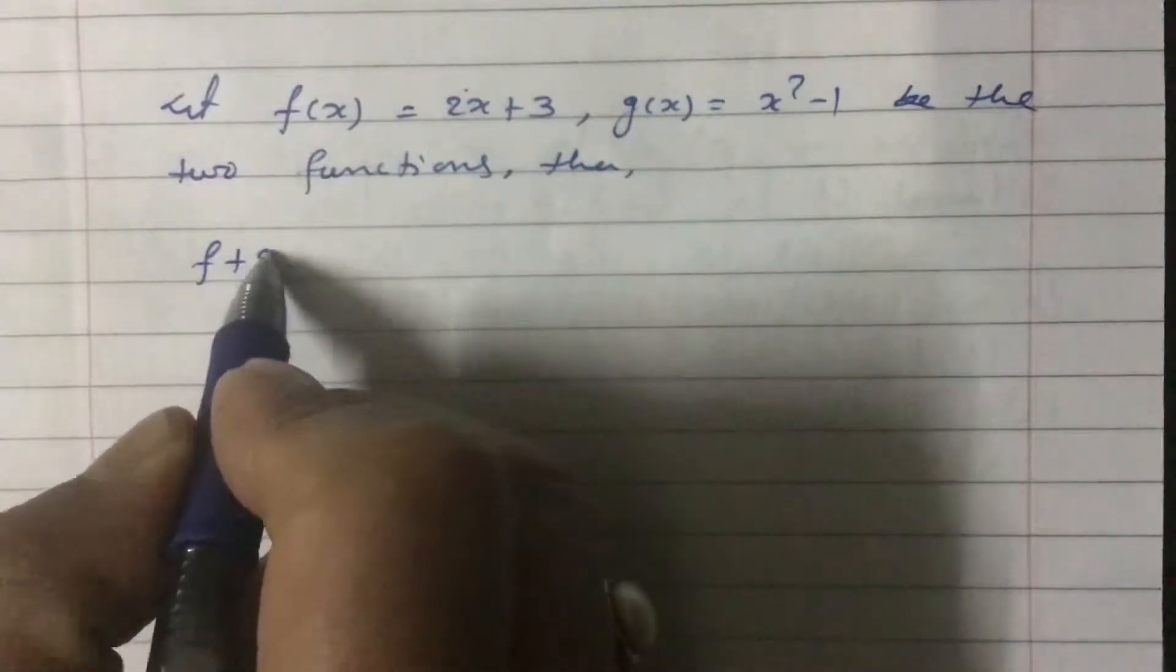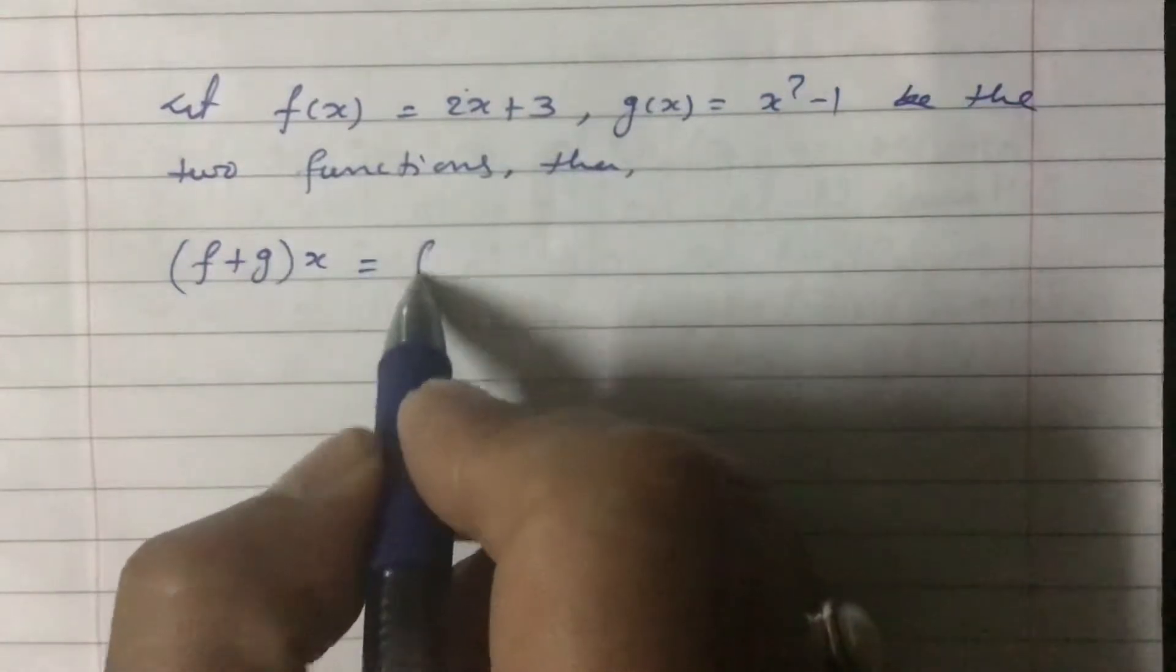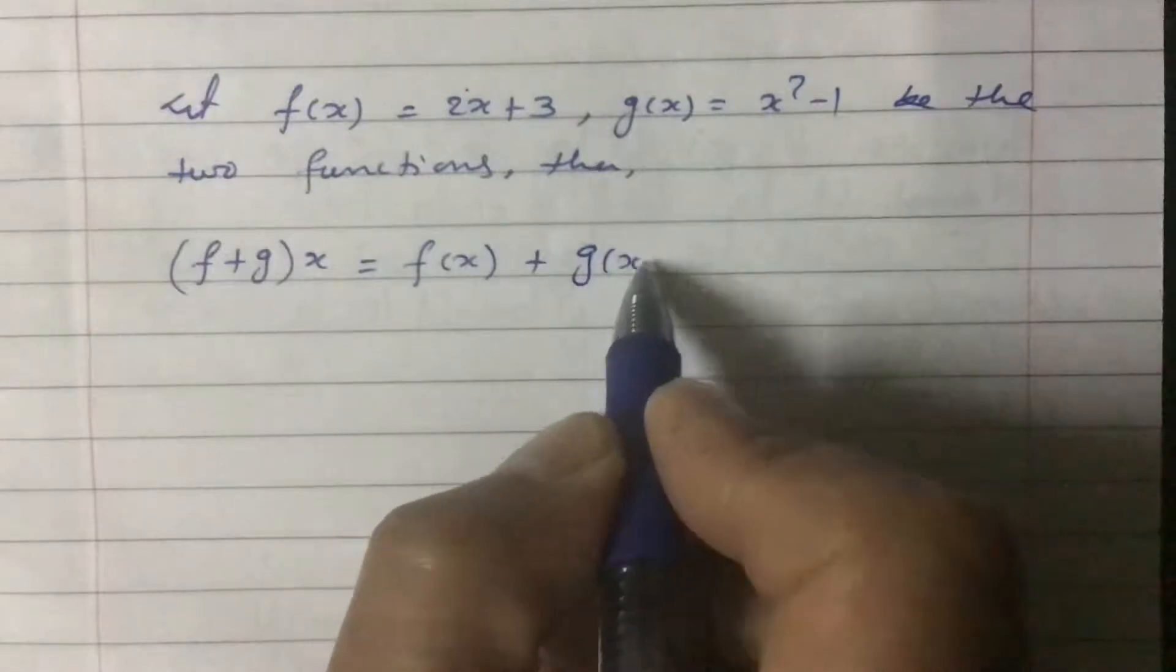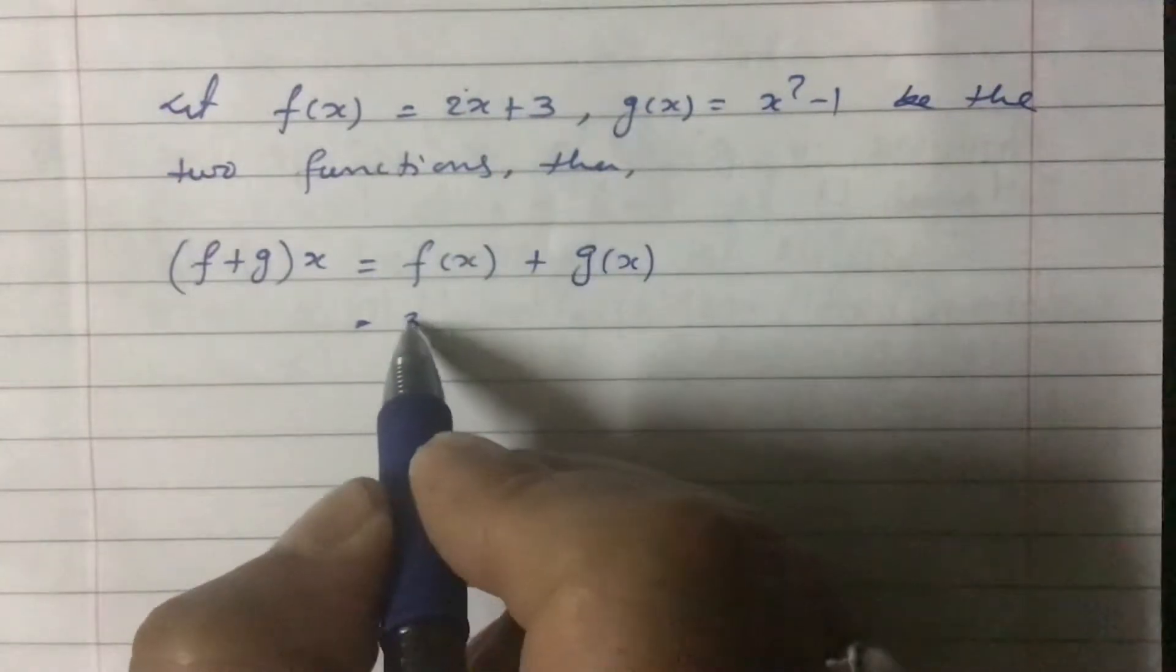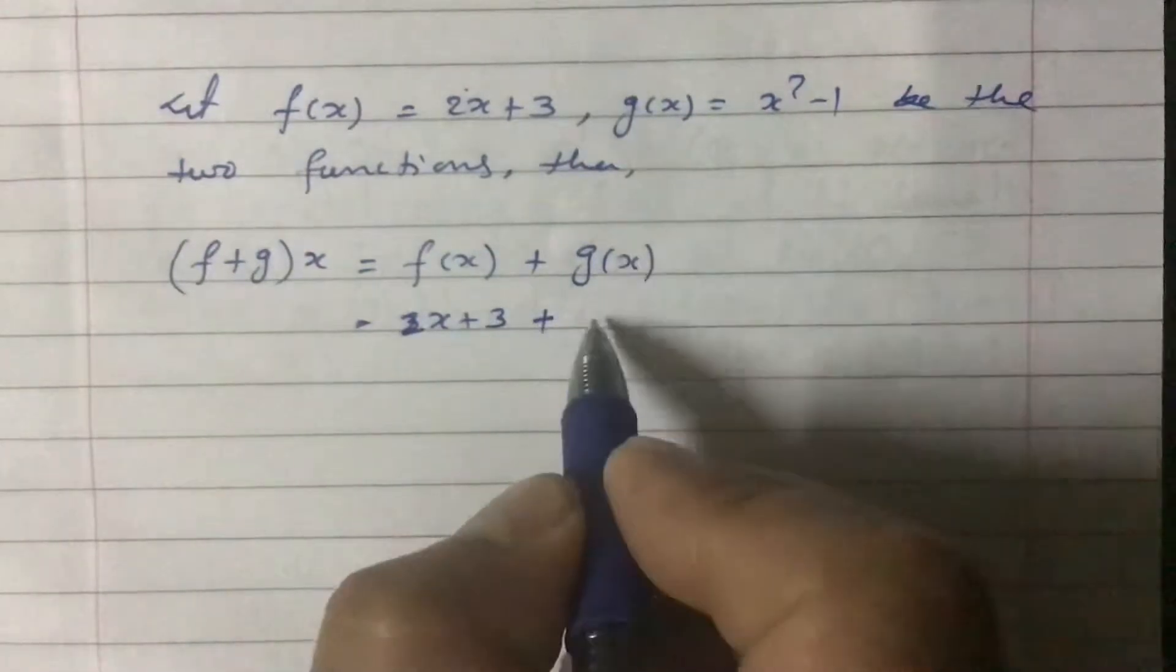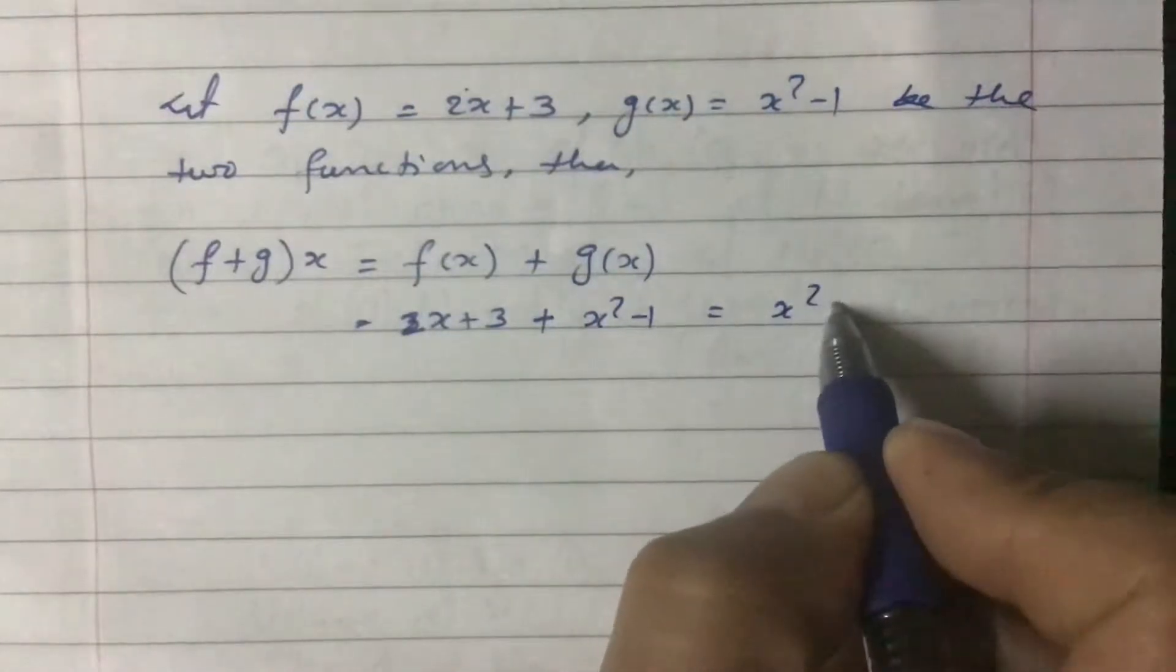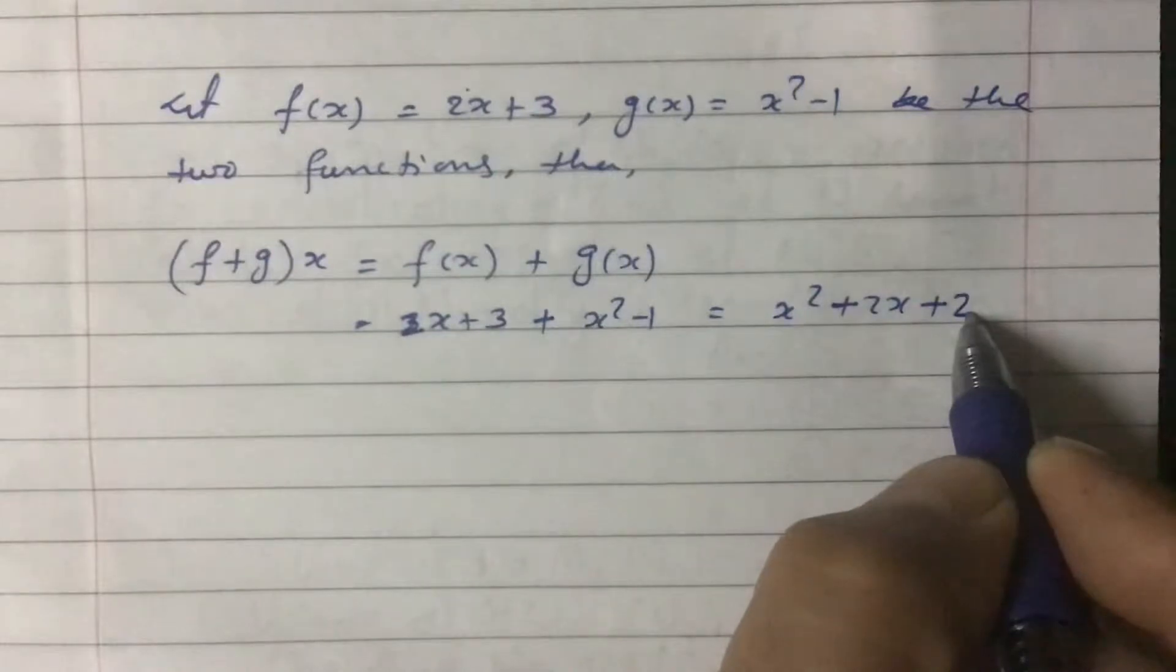Then (f + g)x, which can be written as f(x) plus g(x), we can calculate this one like this: 2x plus 3 plus g(x) is x squared minus 1, which equals x squared plus 2x plus 2. So this is f plus gx.